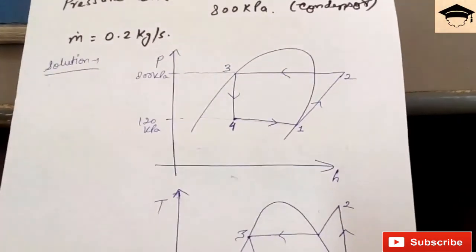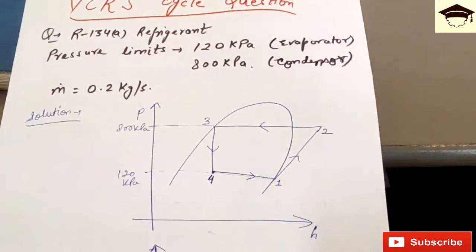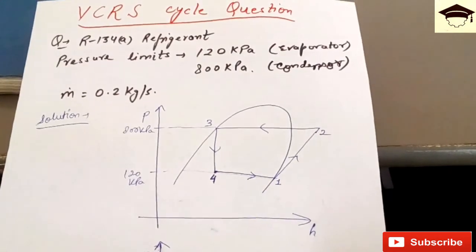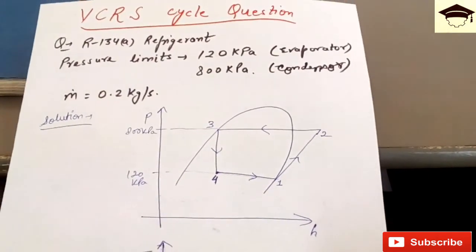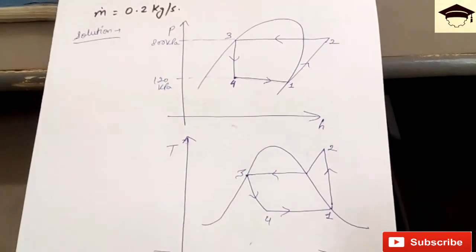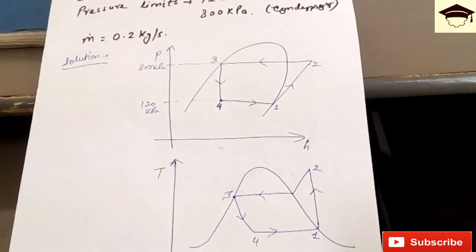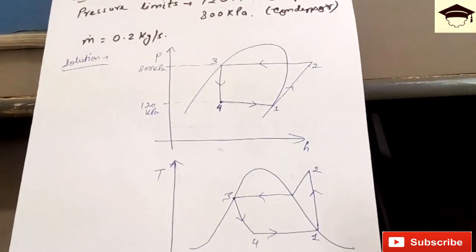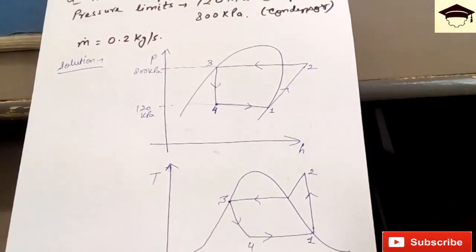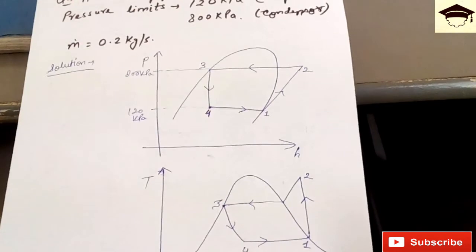Now the pH diagram corresponds to this and the TS diagram corresponds to this. Point 1 is the inlet of the compressor, 2 is the outlet of the compressor, 3 is the outlet of the condenser, 4 is the outlet of the expansion valve. Refrigeration effect is h1 minus h4, and the power or work input needed in the compressor is h2 minus h1. Now we have to find the values of h at the corresponding points 1, 2, 3, and 4. Note that h3 is equal to h4.